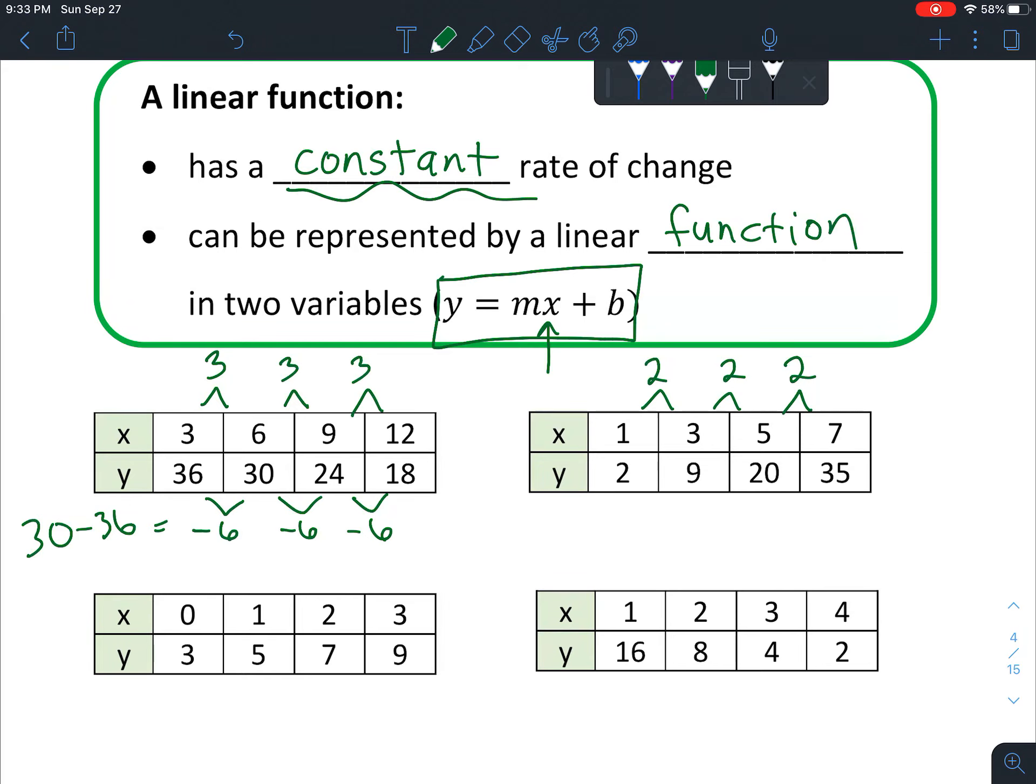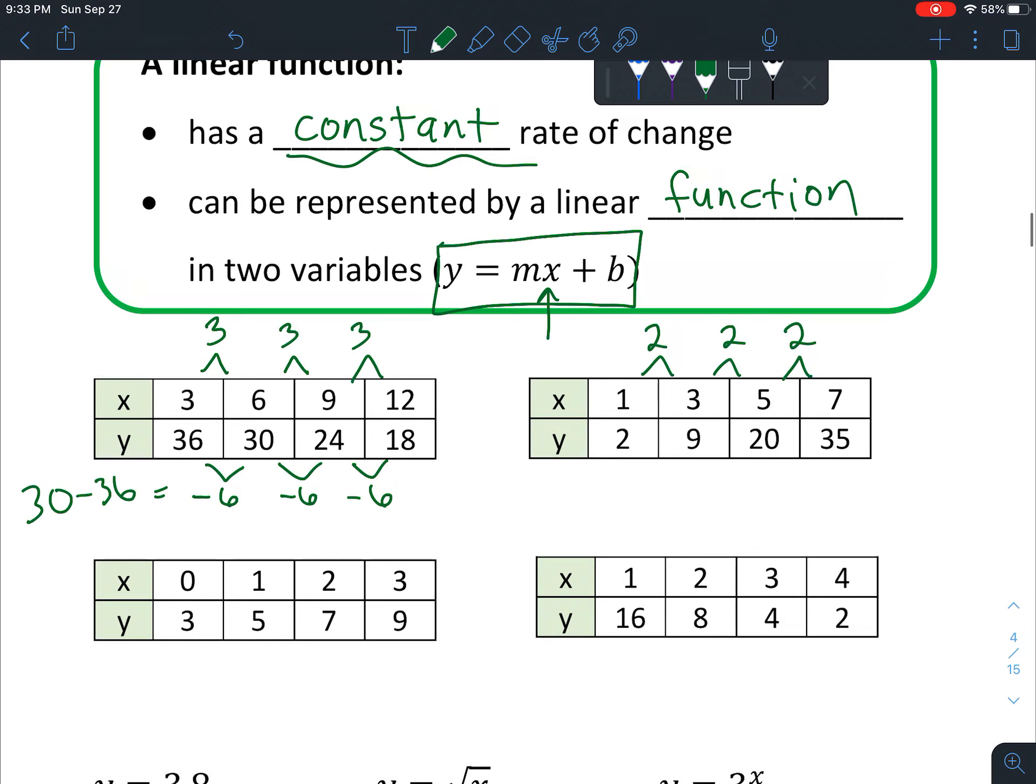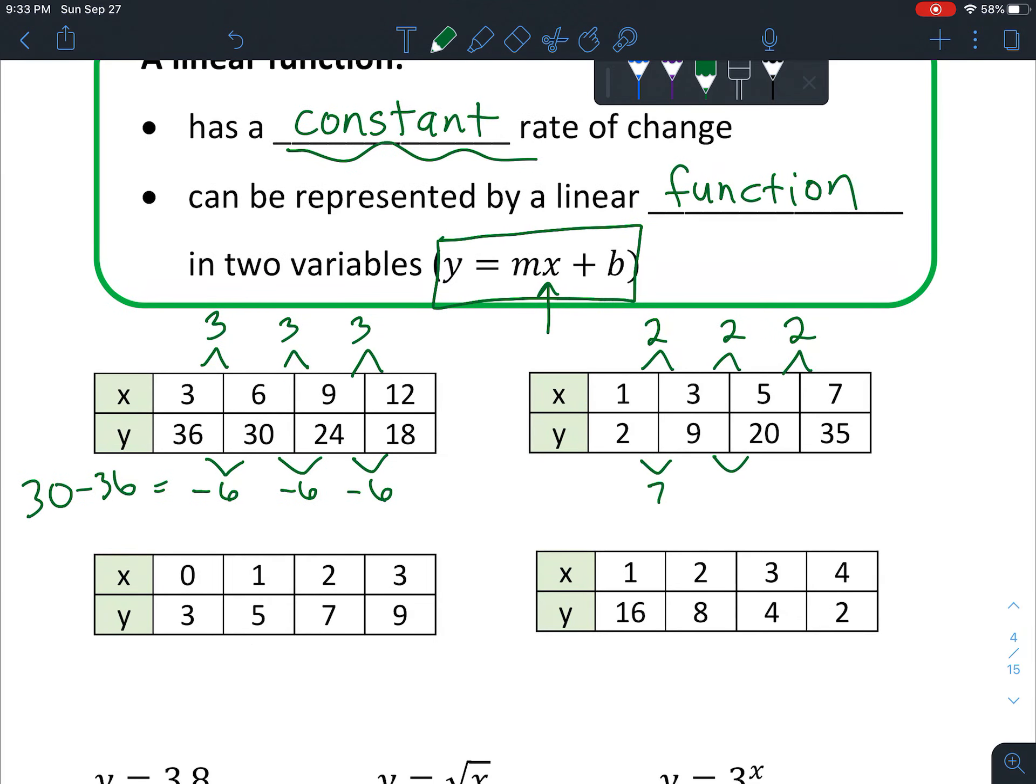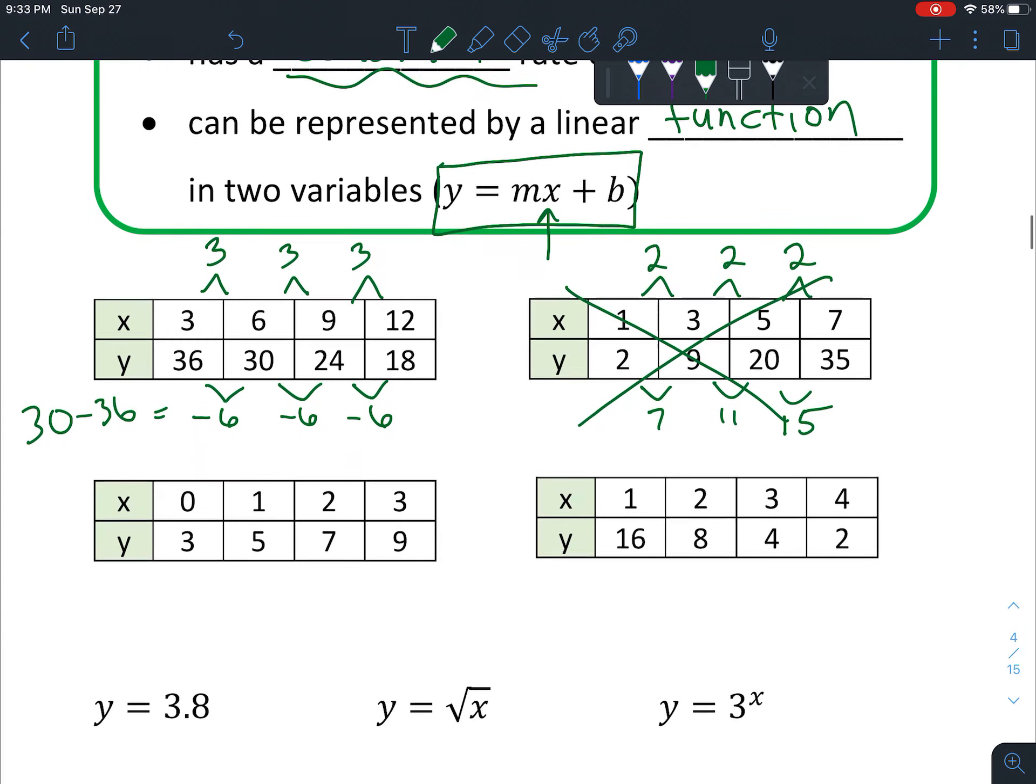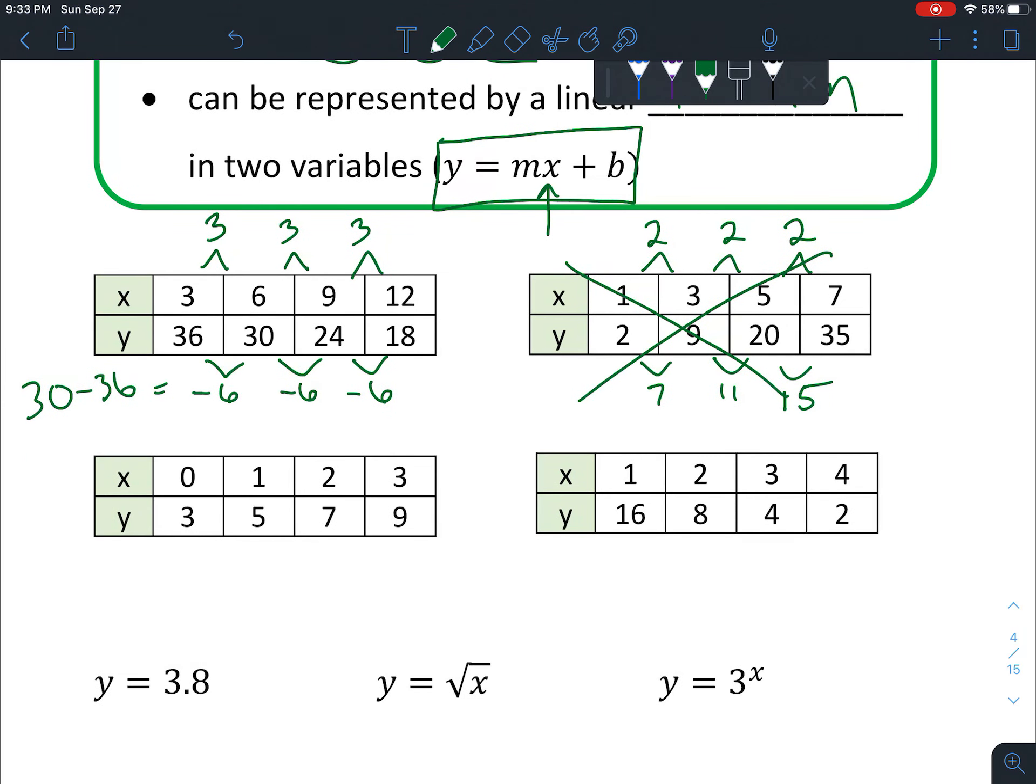But we'll talk more about that as we get deeper into this subject. Let's check: 9 minus 2 is 7, 20 minus 9 is 11, 35 minus 20 is 15. This one is not a constant rate of change, so that one is not going to be a linear function. It still might be a function, it's just not a linear function.